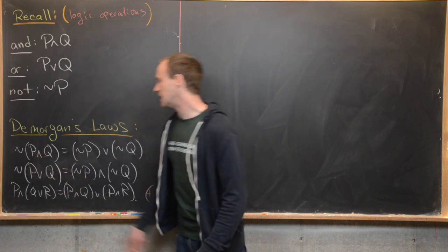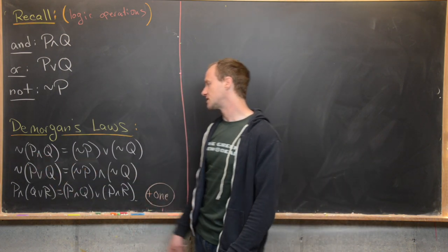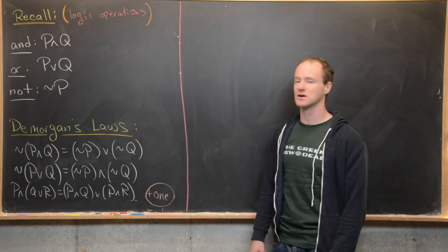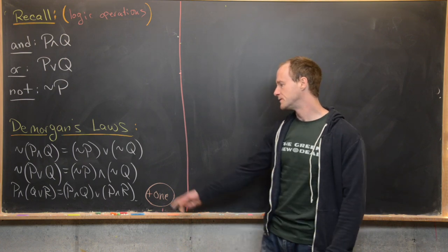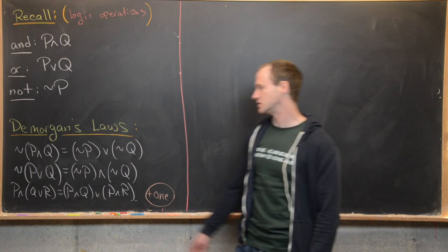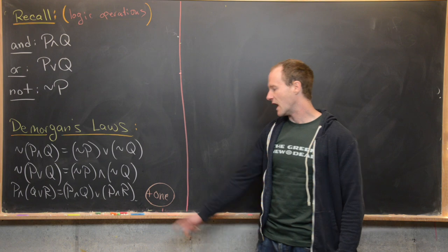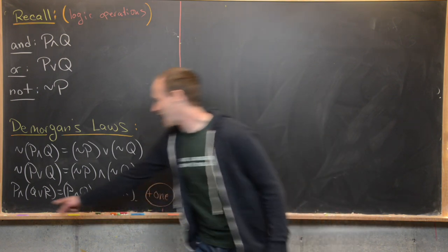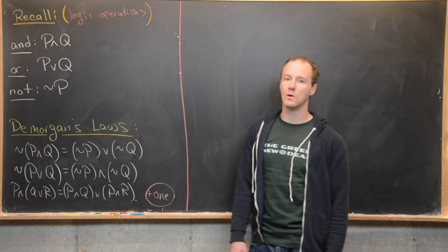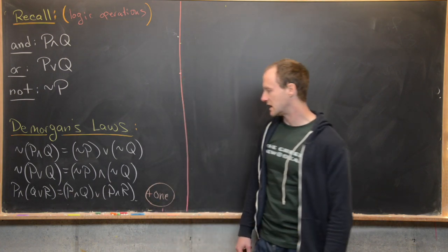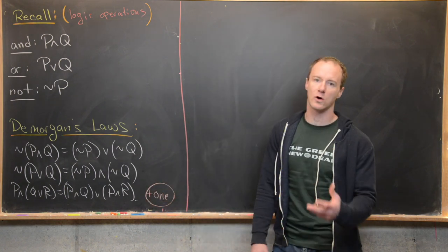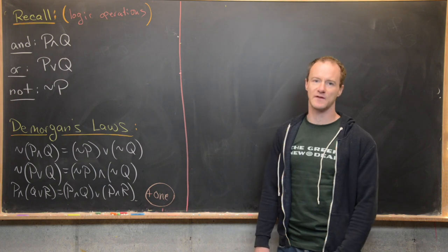I'll state DeMorgan's laws — we may prove one of them, and others you'll prove in group work. First: NOT(P AND Q) is equivalent to (NOT P) OR (NOT Q) — NOT distributes across AND, flipping it to OR. Second: NOT(P OR Q) is equivalent to (NOT P) AND (NOT Q). Third: P AND (Q OR R) is equivalent to (P AND Q) OR (P AND R) — AND distributes over OR. There's also a distributive rule of OR over AND.